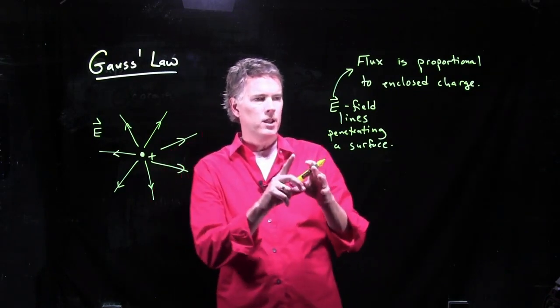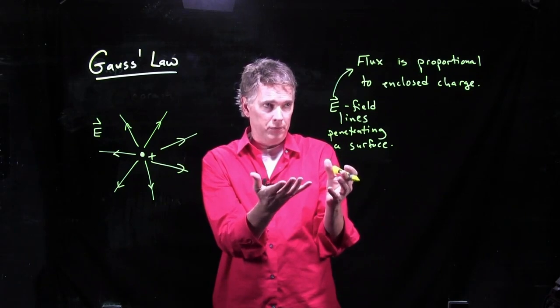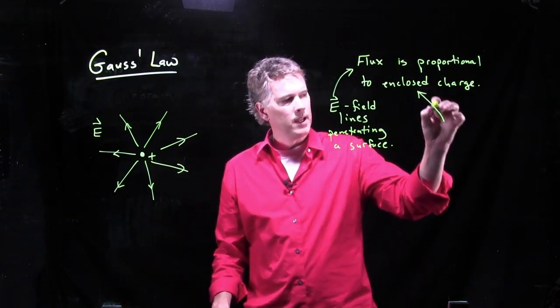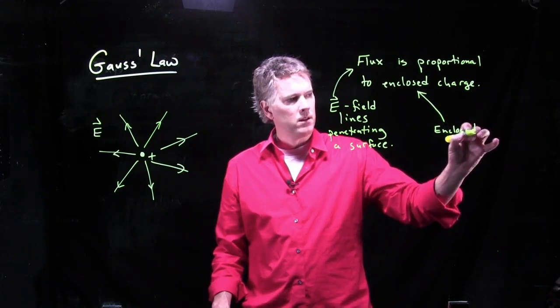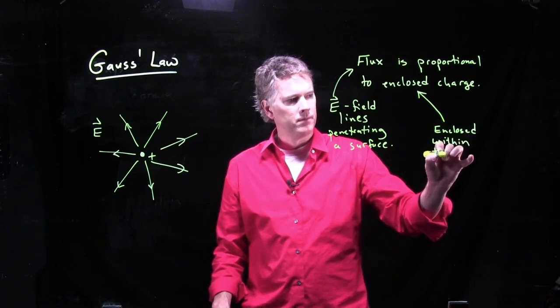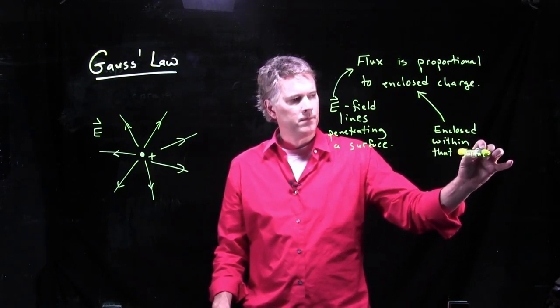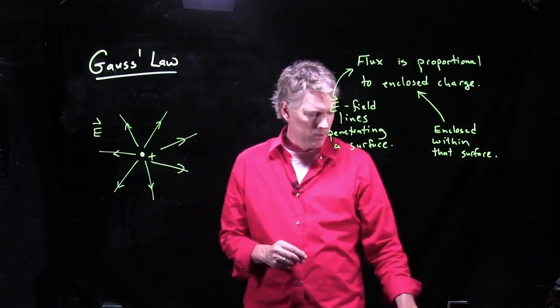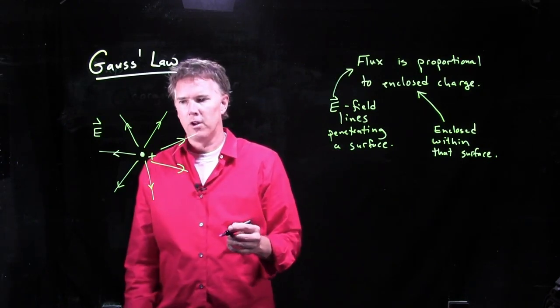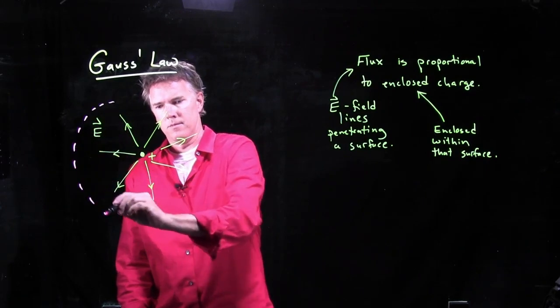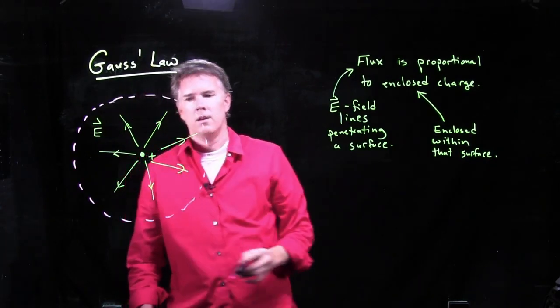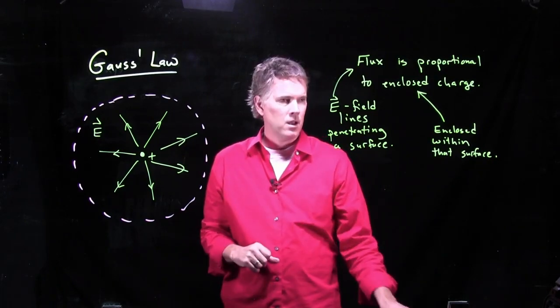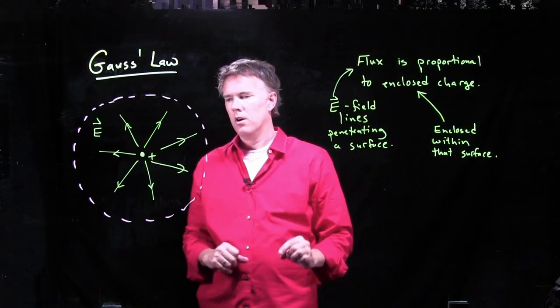When we say the E-field lines penetrating a surface, we need to draw a surface, of course. And what we're saying is it's proportional to the enclosed charge. Enclosed in what? Enclosed within that surface. So for a point charge, let's see if we can understand exactly what this means. If I draw a closed surface around this thing, which would be a sphere...